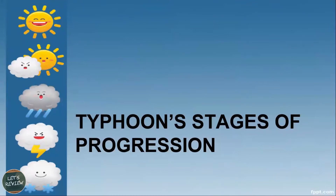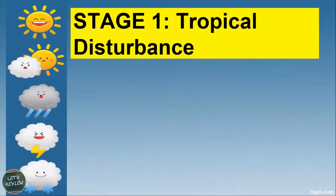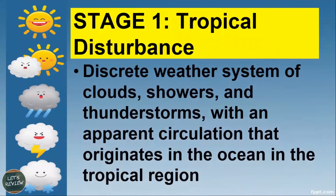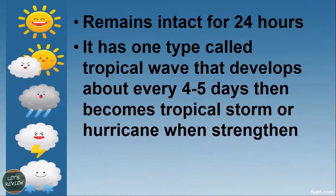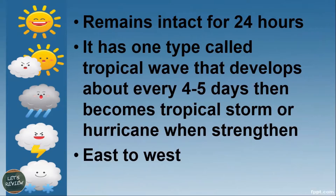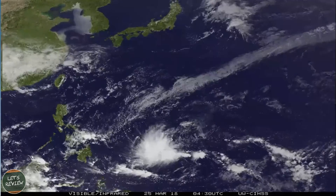Now let's look at the different stages of progression. Stage one is called the tropical disturbance — a discrete weather system of clouds, showers, and thunderstorms with an apparent circulation that originates in the tropical ocean. It remains intact for 24 hours and has one type called a tropical wave that develops every four to five days, then strengthens into a tropical storm, hurricane, or typhoon. Movement is from east to west.